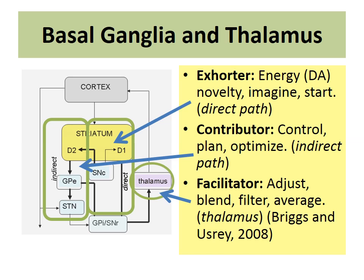The loop goes through the thalamus and back to the cortex — specifically cortex to basal ganglia (striatum, globus pallidus, and substantia nigra), through thalamus, back to cortex. Basal ganglia research has shown there is a direct path and an indirect path. The direct path is related to dopamine: dopamine enhances the direct path through D1 receptors and suppresses the indirect path through D2 receptors. You can see that same interaction between exhorter and contributor — between the horse and the rider — occurring in the basal ganglia.